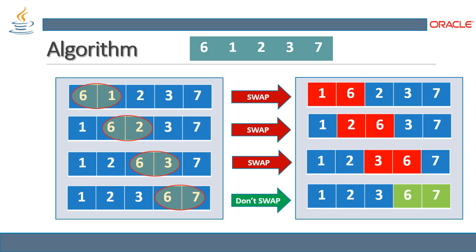In the first iteration, the bubble then moves to the next position, comparing six and two. Six is greater than two, so it has to swap. After swapping, we have one, two, and six — the red blocks indicating a swap has occurred. These two numbers are now in the correct position.